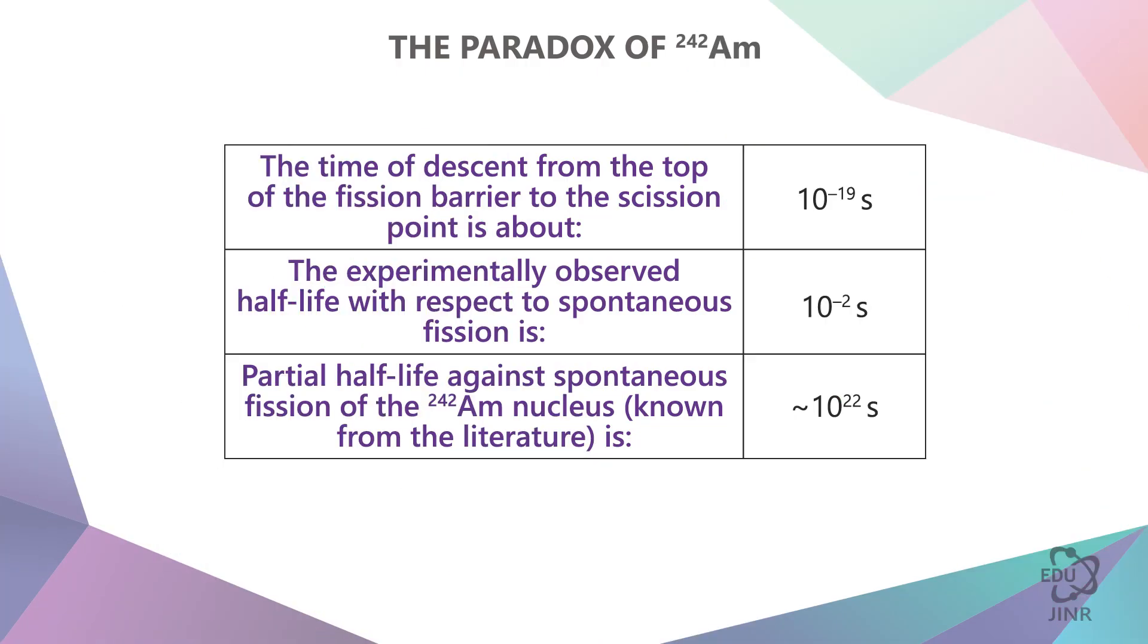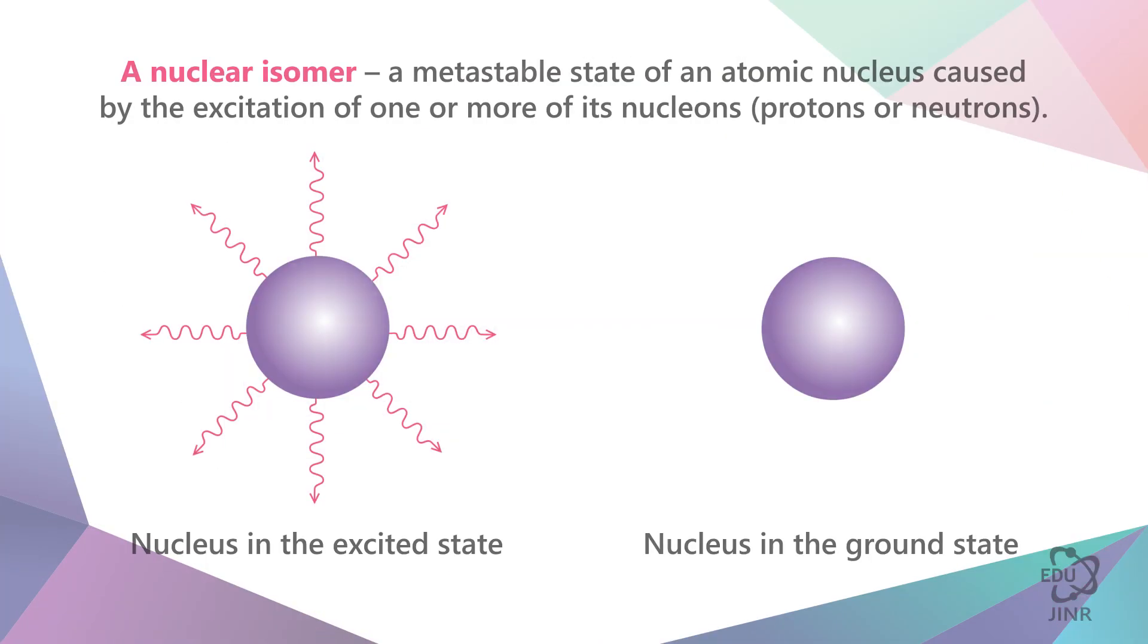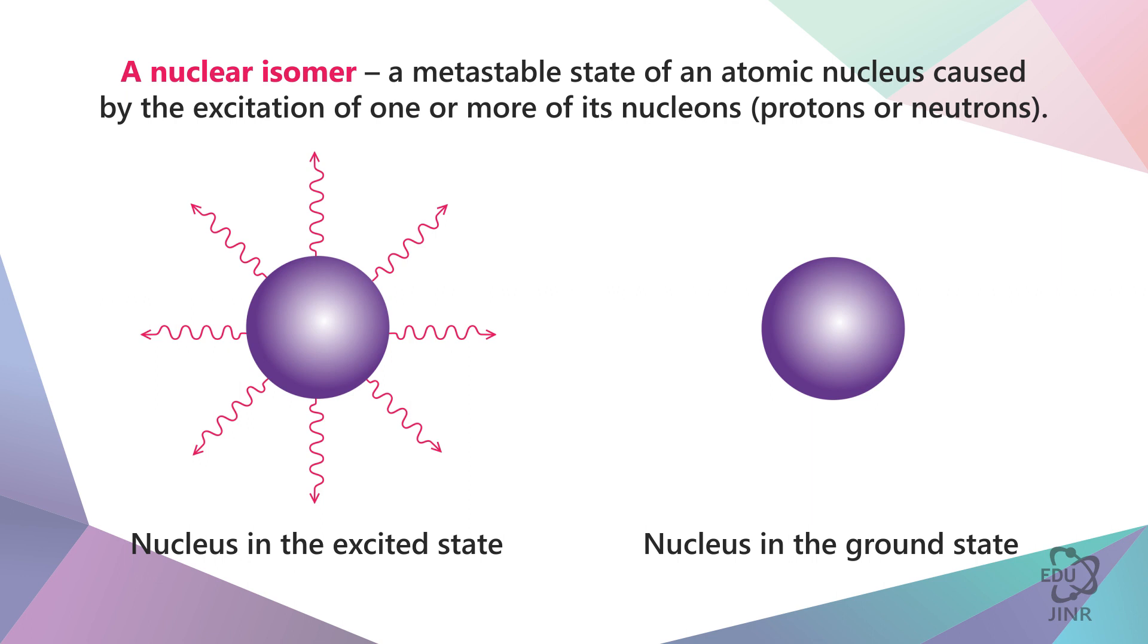Then the idea arose that it was probably an isomer. The word isomer means that the nucleus has some properties when it decays in the ground state. But if this nucleus was transferred to some excited state with other quantum numbers from which decay is forbidden, then this state is called isomeric.